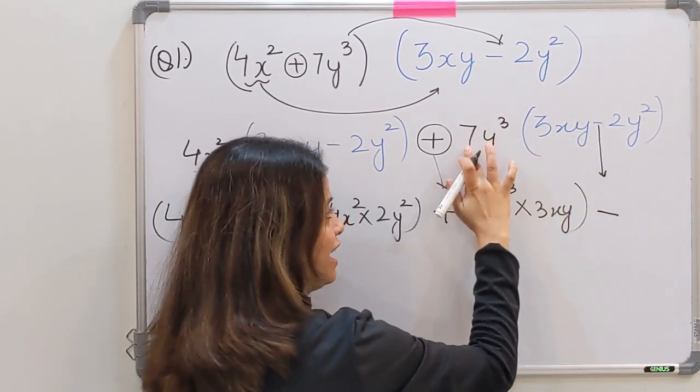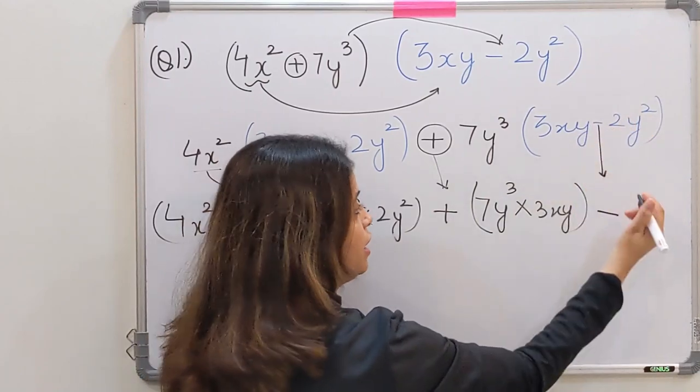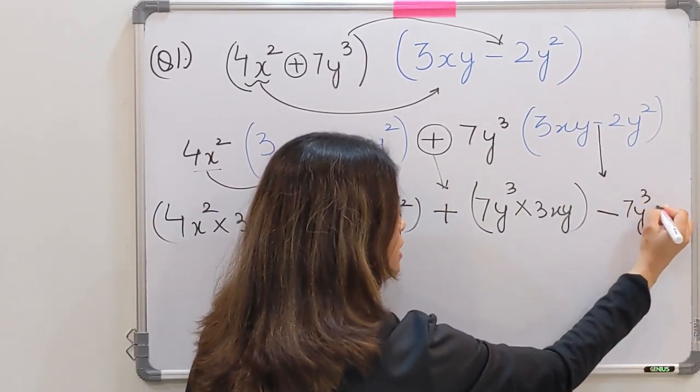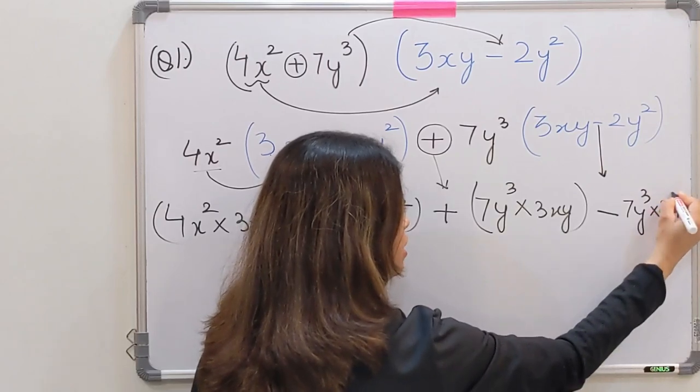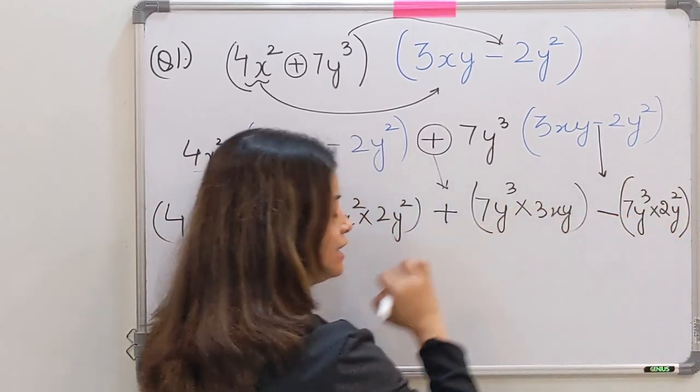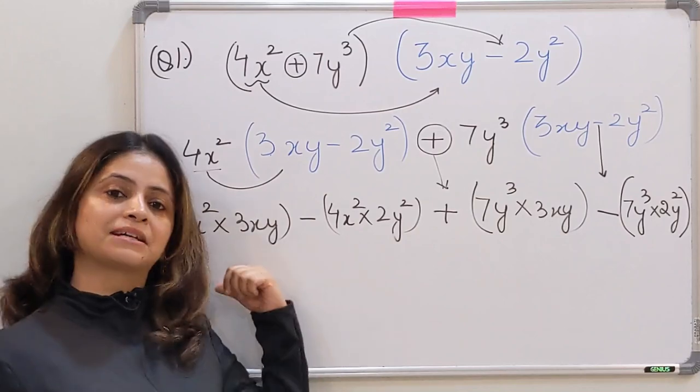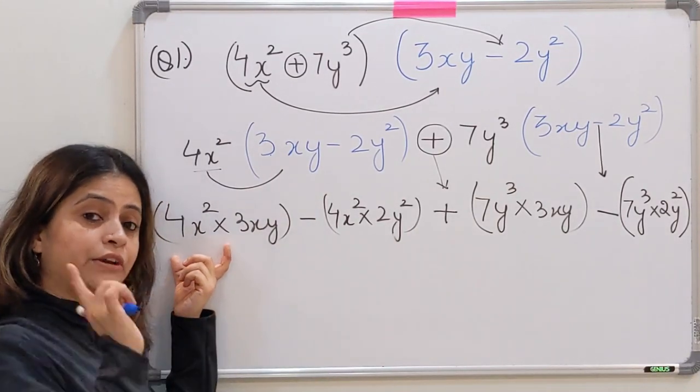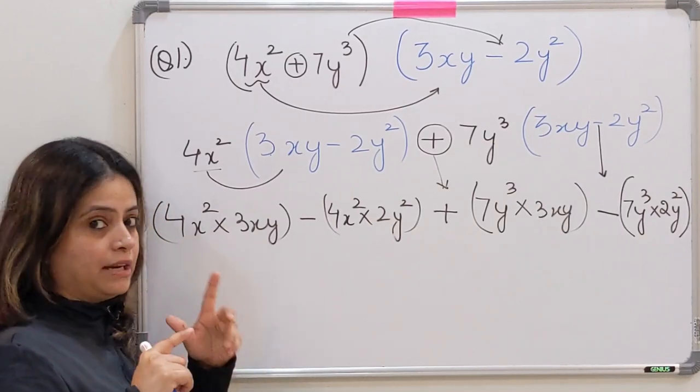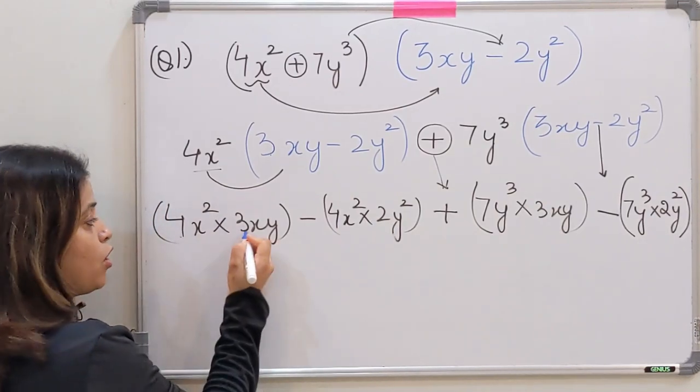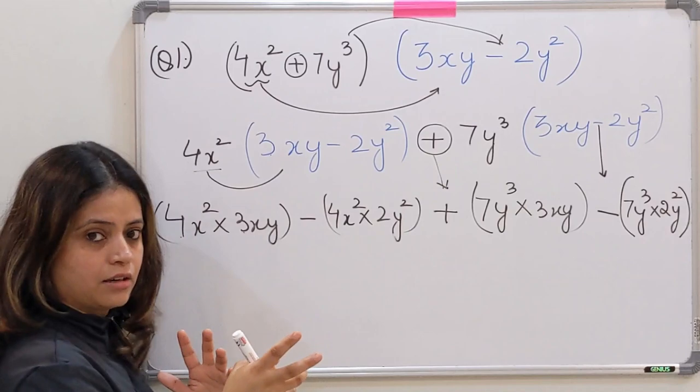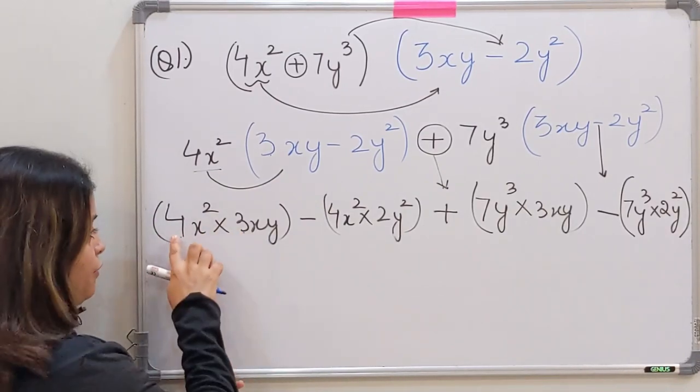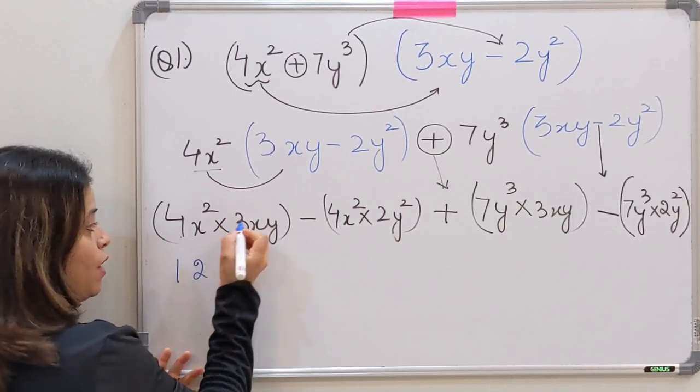Now this minus sign will come here. This is multiplied by this and this will again be multiplied by 2y². So minus 7y³ multiply by 2y² like this. Now the next step is the complete multiplication. How do you multiply two monomials? Its video is already shared. If you don't know, check that out first. 4 and 3, constant ko constant ya coefficient ko coefficient ke saath multiply karenge. 4 threes are 12.